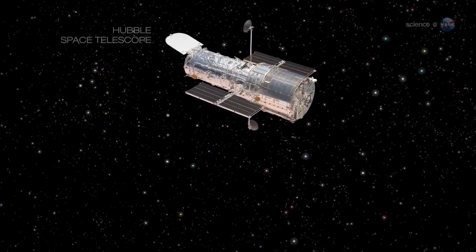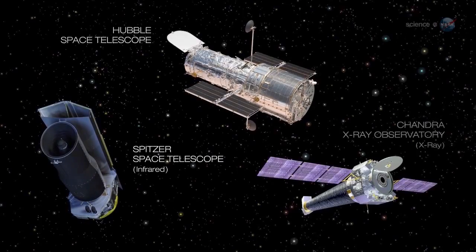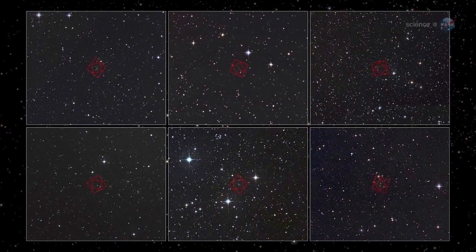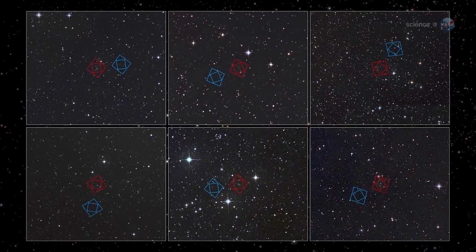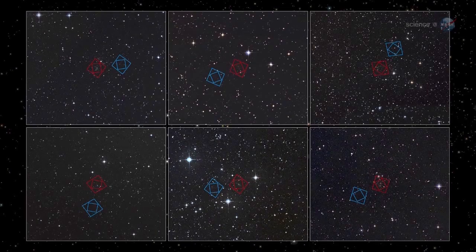Abell 2744 is just the beginning. The Frontier Fields program is targeting six galaxy clusters as gravitational lenses. Together, they form an array of mighty telescopes capable of probing the heavens as never before.